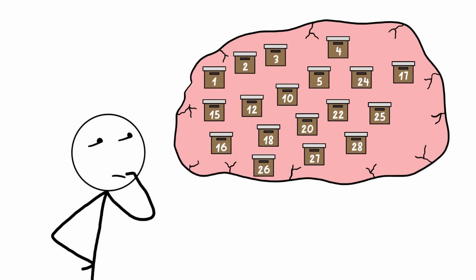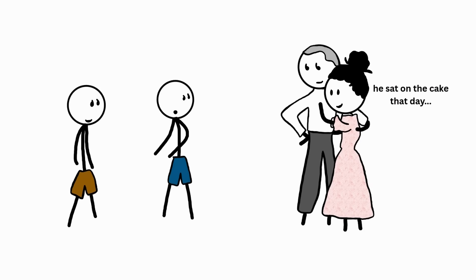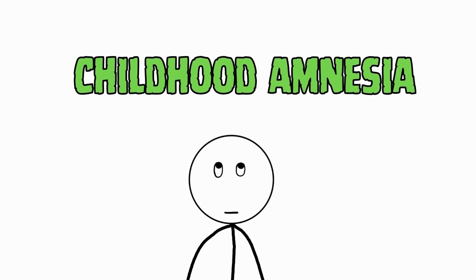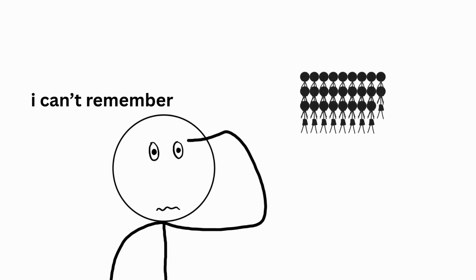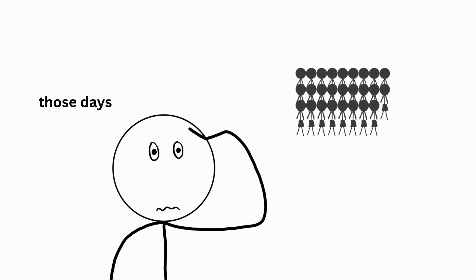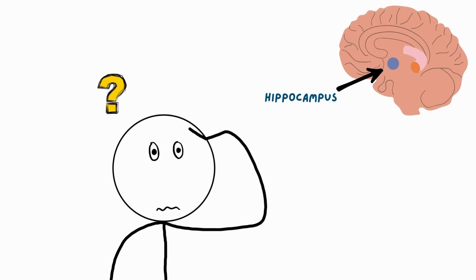It feels like your life before you turned three was erased from the archives. Undoubtedly, your parents say you did some cute things, but your memory files are non-existent. Childhood amnesia just reared its head. The majority of grown-ups cannot remember early childhood memories because the hippocampus, your brain's memory center, was still developing at the time.